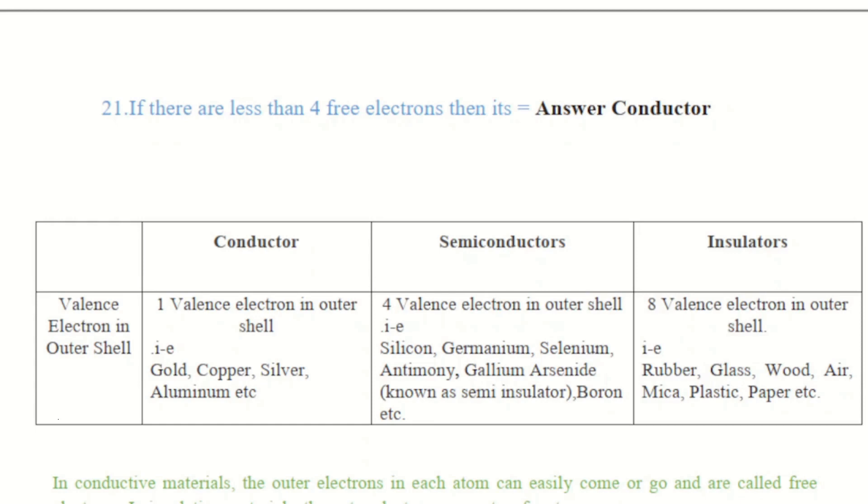Starting from question number 21. If there are less than 4 free electrons then its answer will be the conductor. How you can say the conductor? Let's see over here there are 3 different materials: conductor, semiconductor, insulators. According to the valence electrons in the outermost shell, in conductor there are 1 valence electrons in the outermost shell.